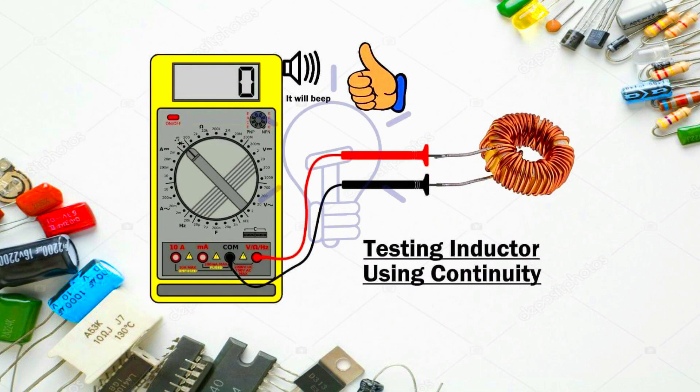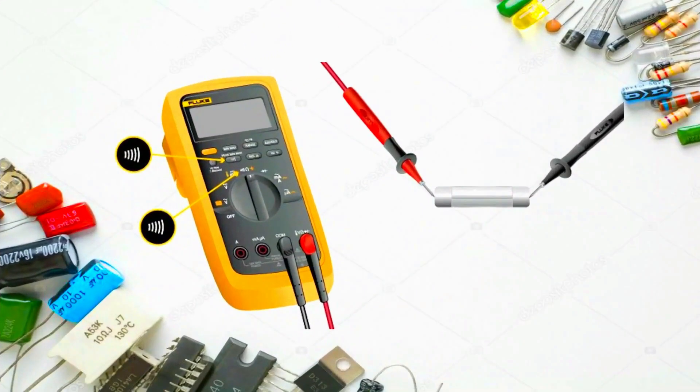The digital multimeter's continuity test mode can be used to test switches, fuses, electrical connections, conductors, and other components. The resistance is determined by the range setting of the multimeter. Take a look at the continuity symbol.